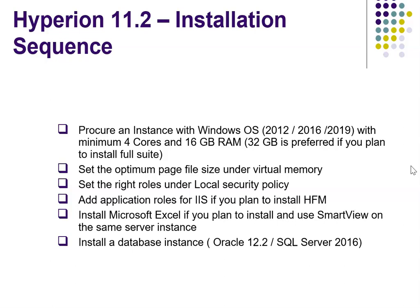The next step is to ensure the page file size is at the optimum level under virtual memory. The third step is to set the right roles under local security policy under user rights management. Next, we need to add additional application roles to enable IIS, because IIS is going to be the web server for Hyperion Financial Management. If you plan to install SmartView on the same server, you'll also need Microsoft Excel installed. Finally, we need a database instance up and running — for today's demo I'm going to use Oracle 12.2.